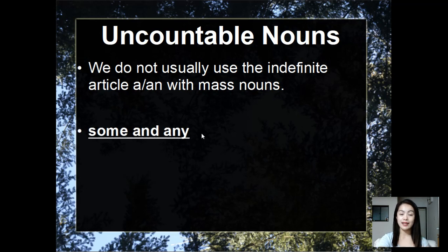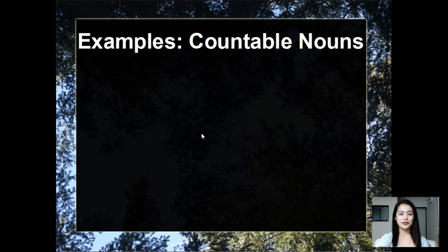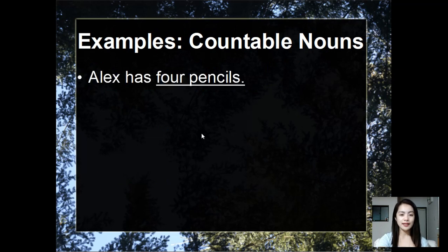Let's move on to examples. Examples for countable nouns: take a look at this example. Alex has four pencils. In this sentence we use a numeral, four, to modify countable nouns. Can you count pencils? It's a big yes, so we use numerals.